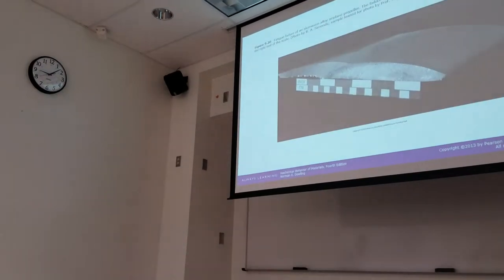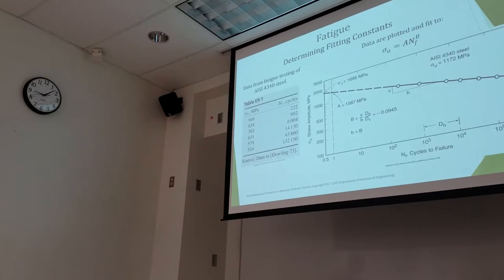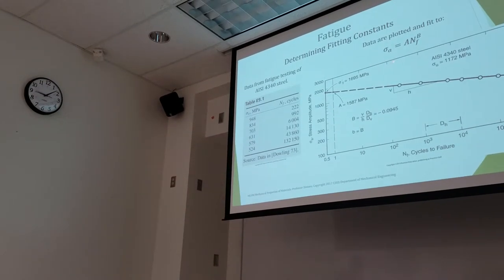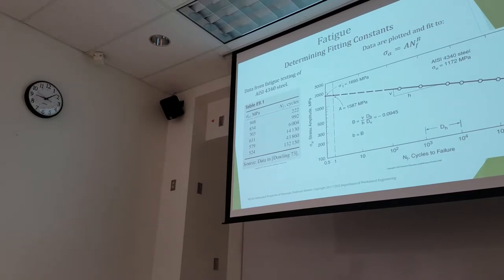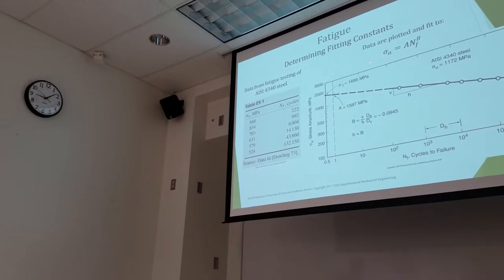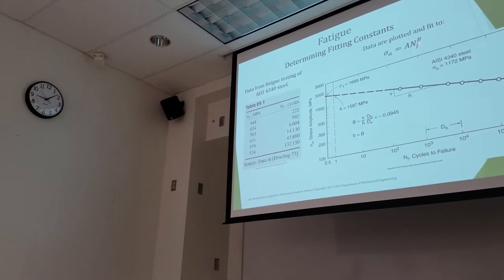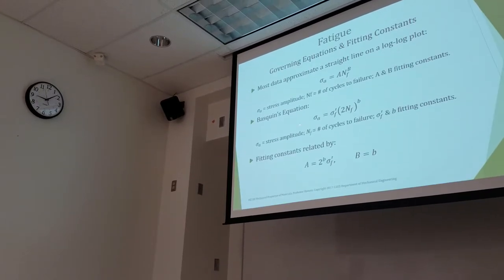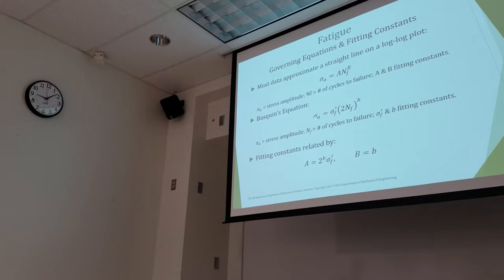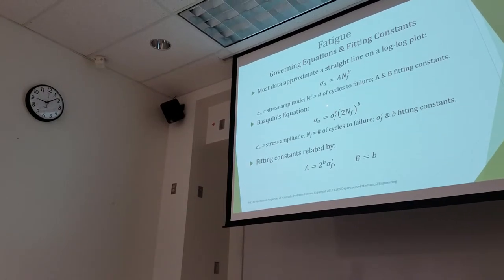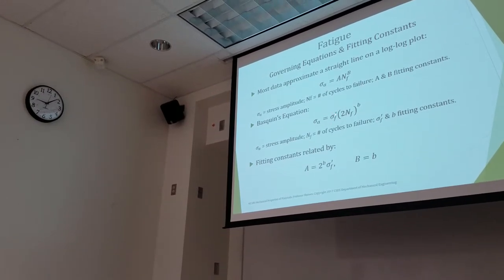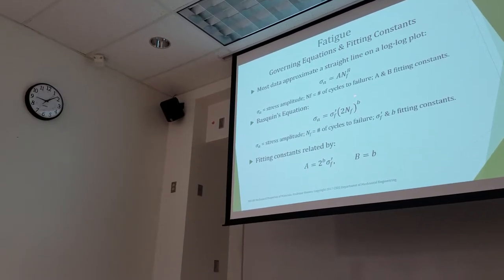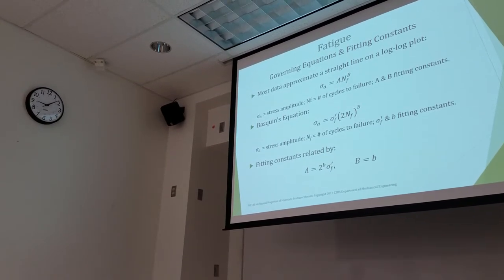Let's make sure we remember what our design equations are. Sigma A equals A and N_F to the B. Remember, this Sigma A is our fully reversed stress amplitude, and A and B are fitting constants. We also have Basquin's equation: stress amplitude equals a materials constant sigma_F prime times the quantity 2N_F to the power of little b. That's a materials constant you can look up in tables.